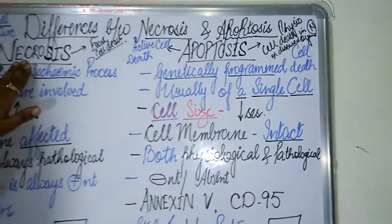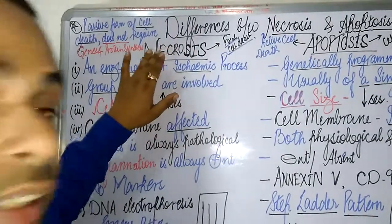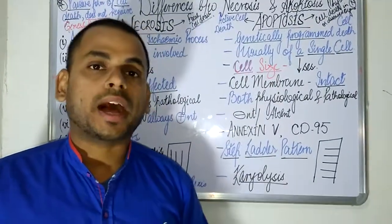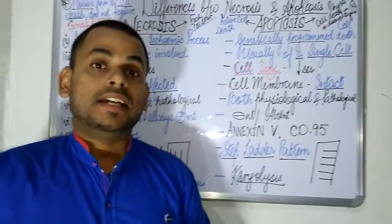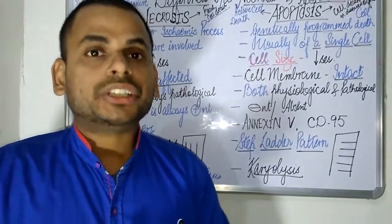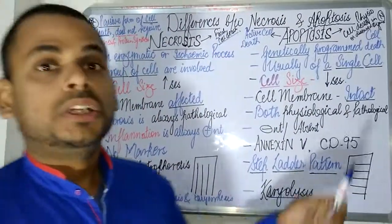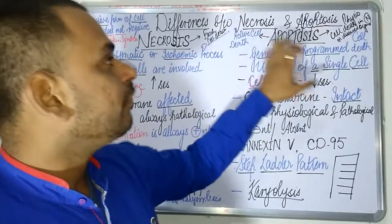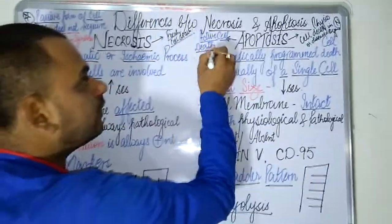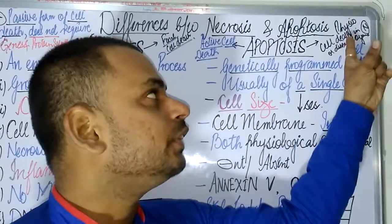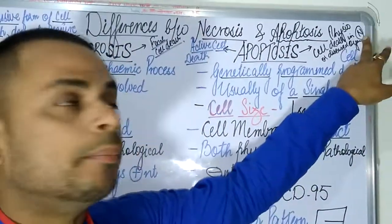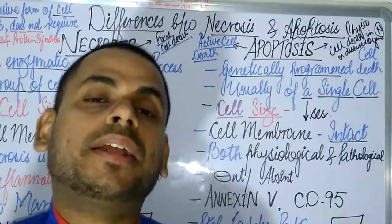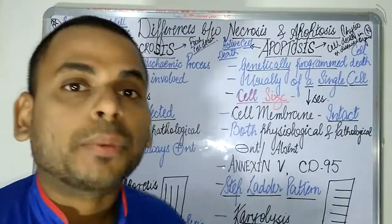Another important striking feature: necrosis is a passive form of cell death and does not require gene activation and protein synthesis. Whereas apoptosis is an active cell death, which can occur physiologically — the cell death can occur either in normal or diseased organs. It is a genetically programmed phenomenon and requires gene activation and protein synthesis.